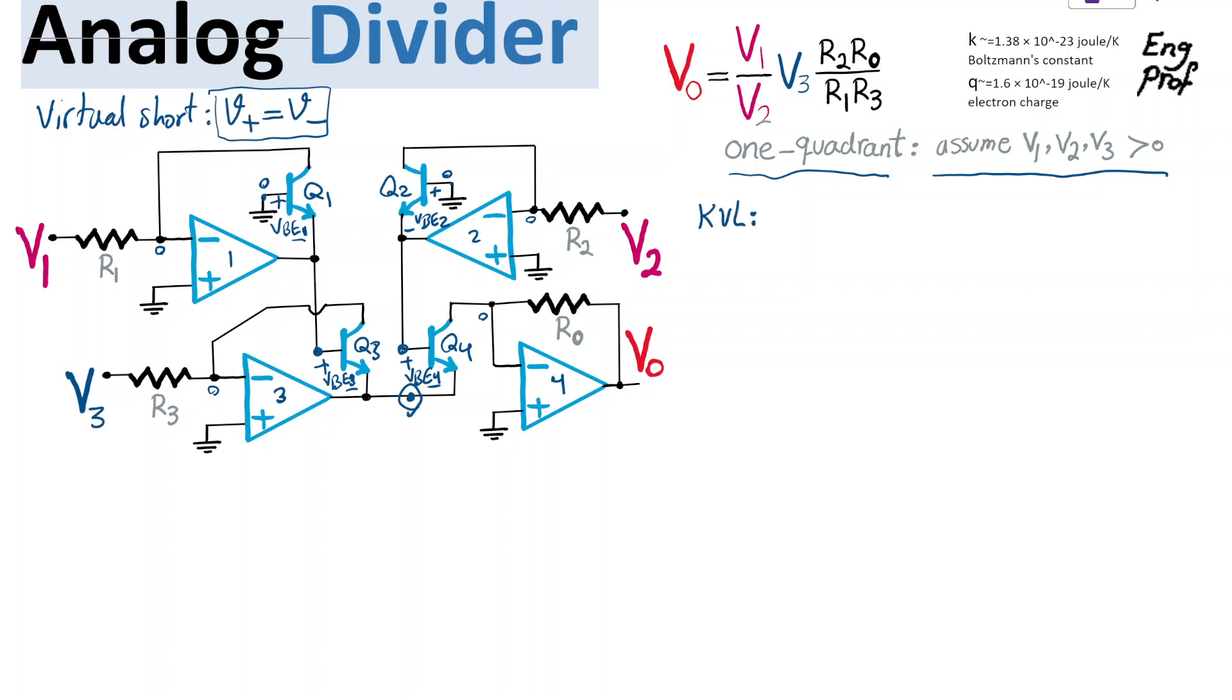using Kirchhoff voltage law, or KVL, I can write VBE of transistor 1 plus VBE of transistor 3, basically the two base emitters on the left-hand side of the circuit.